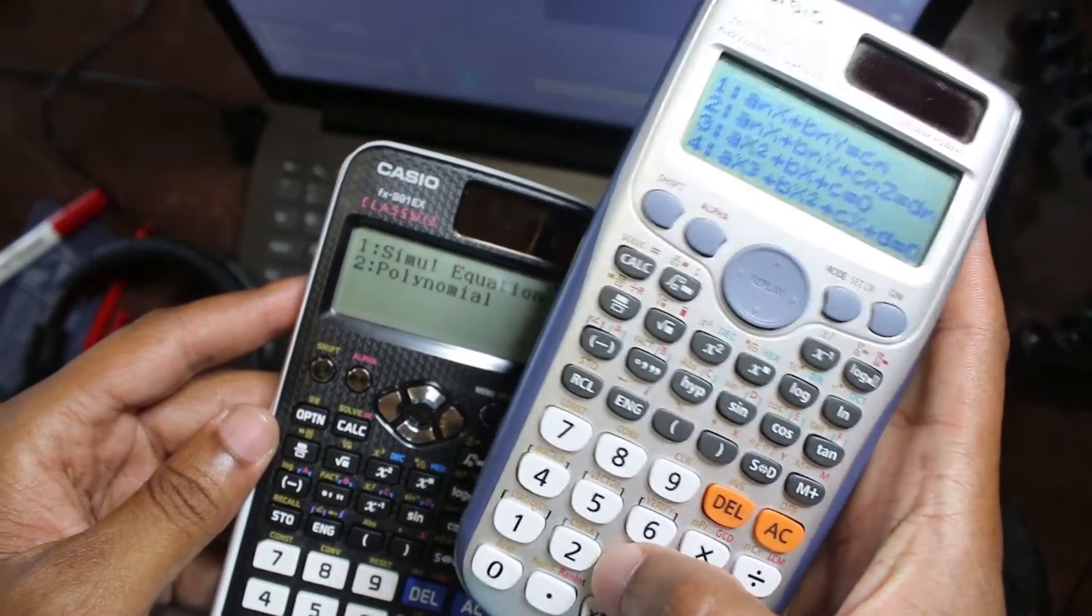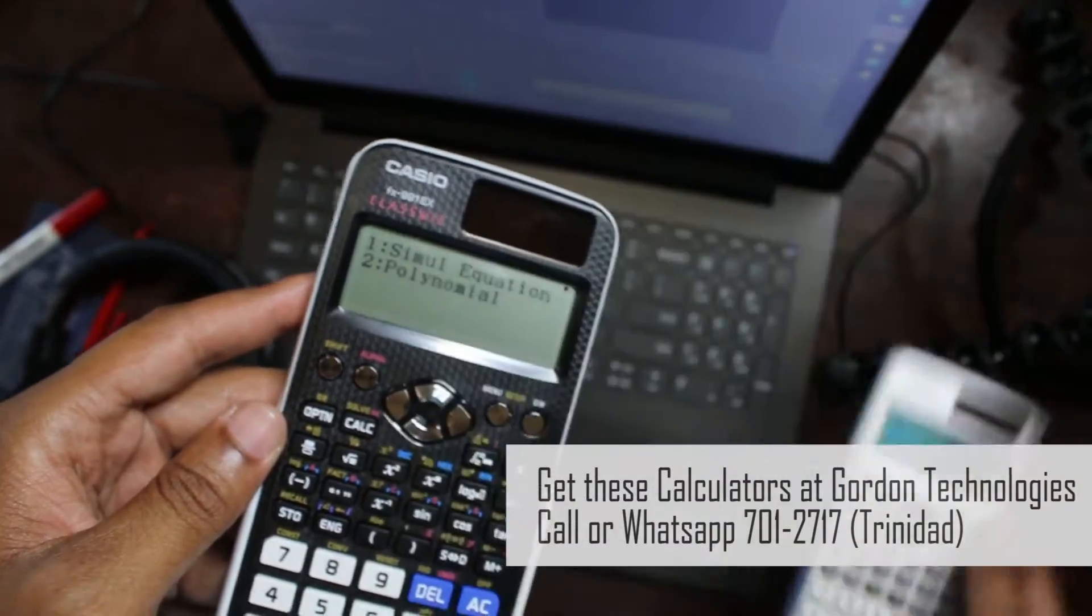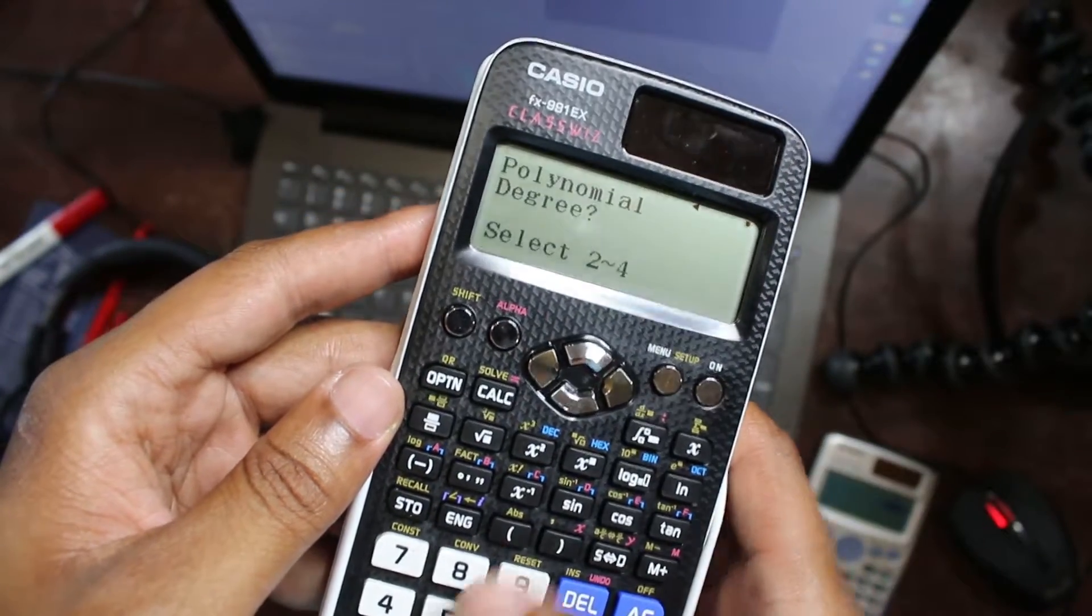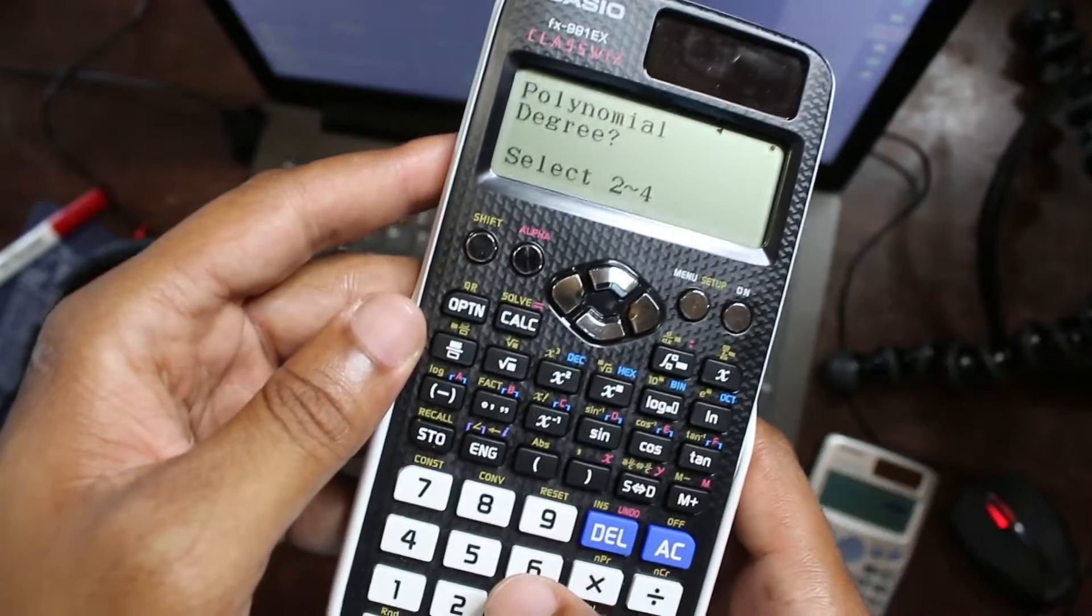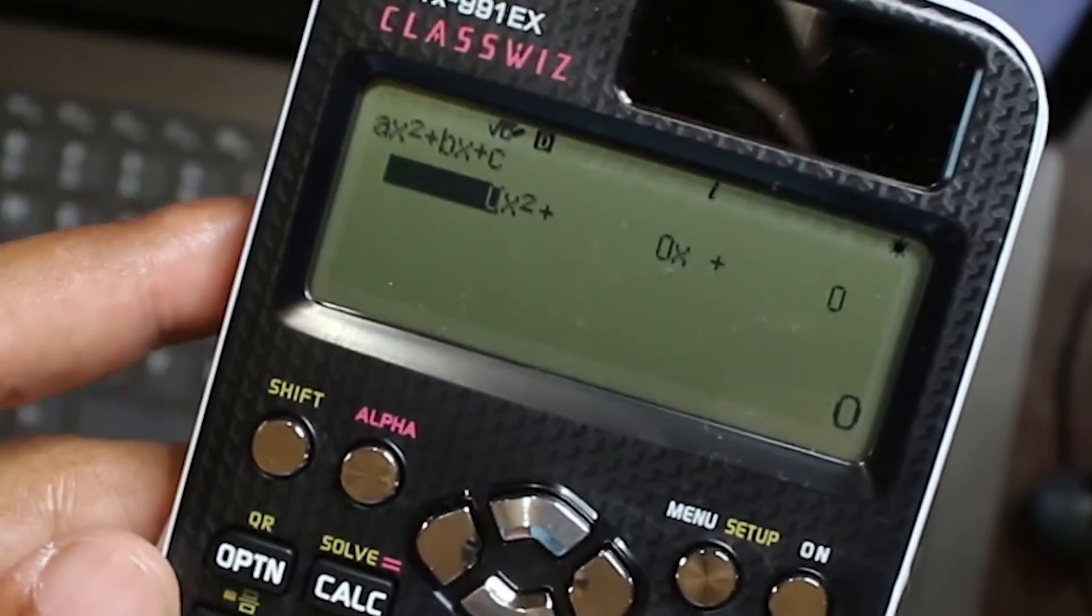You could just press three to get quadratic here and now you put in the coefficients of the quadratic to solve. So here you select polynomial first, then you select what degree of the polynomial you want. That's two and you have your quadratic up there.